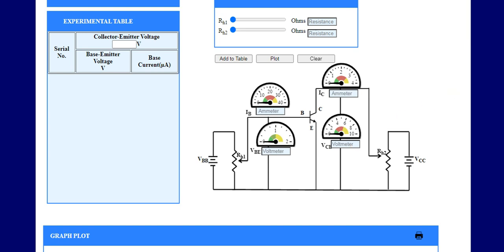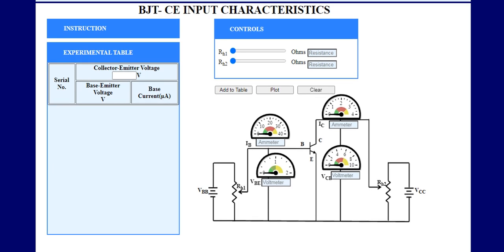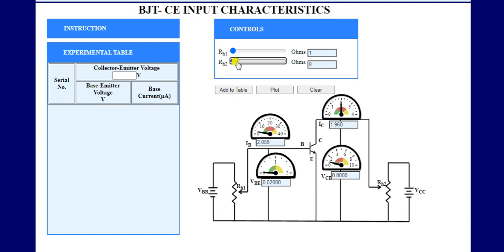Let's start the simulation. First, we set the value of RH1 and RH2 to 1 ohm — simply click and set each to 1 ohm. Now change the value of RH2 to set VCE to 1 volt.